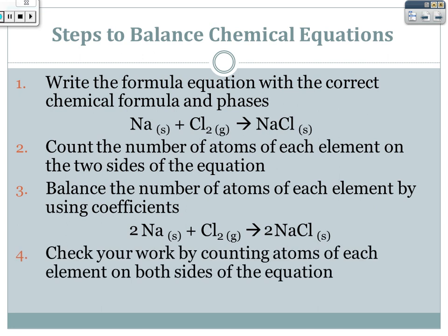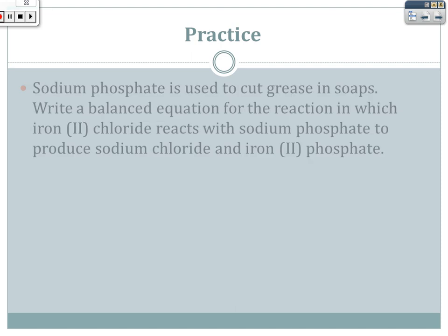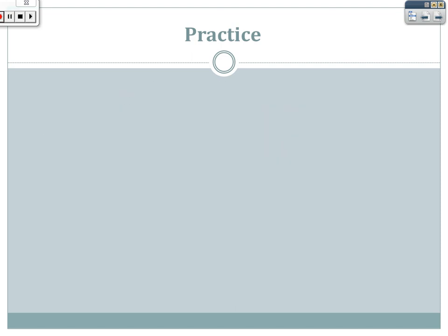The final step is to check your work by counting atoms of each element on both sides of the equation. You want to continually double-check left and right to make sure it's balanced. That's really it — those are all the steps. Make sure to pause and write these down before we move on to practice.